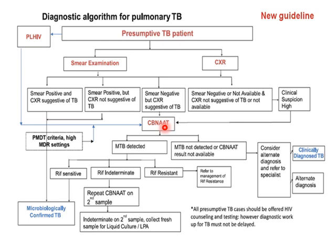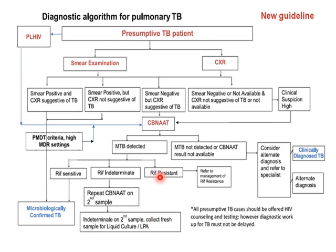Once CBNAAT has been processed, the reports would be either MTB detected or MTB not detected. If MTB is detected, rifampicin result would have three options: sensitive, resistant, or indeterminate. If rifampicin is sensitive, the patient is sent for treatment as per guidelines. If indeterminate, CBNAAT is repeated on a second sample; if again indeterminate, a fresh sample is collected and sent for liquid culture or line probe assay. If rifampicin is resistant, the patient is referred for management of rifampicin-resistant TB.